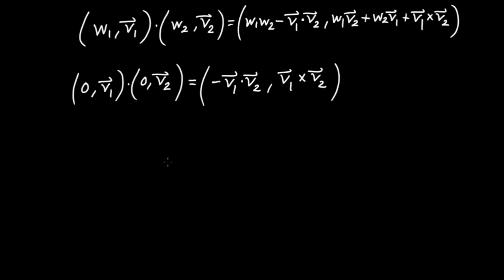So you can see that if you have two three-vectors, what you could do is load those two into quaternions and do quaternion multiplication between them. The new scalar part that comes out is the negative of the dot product between V1 and V2, and the new vector part is V1 cross V2. So you get both of those key operations of vector analysis straight from quaternion multiplication.